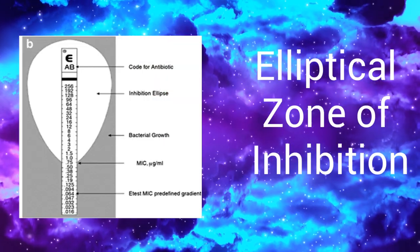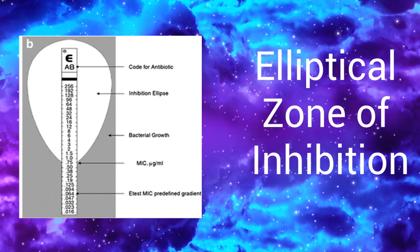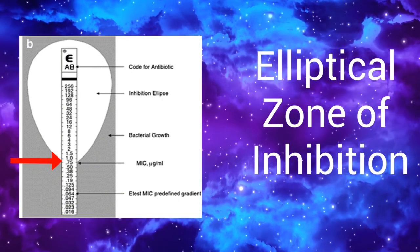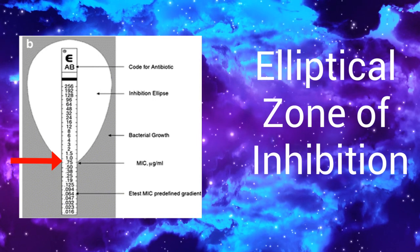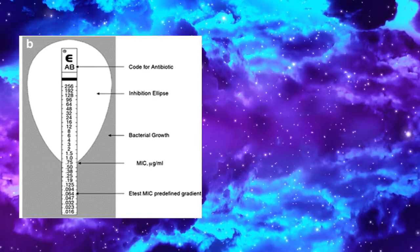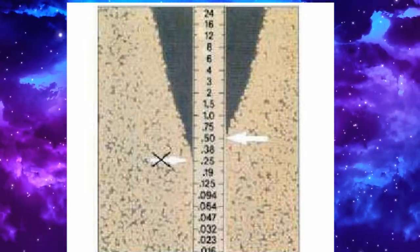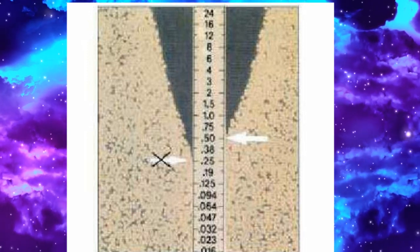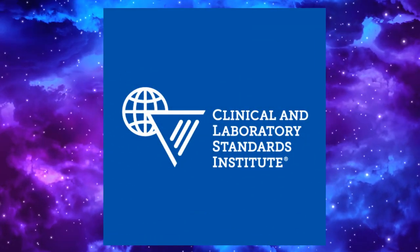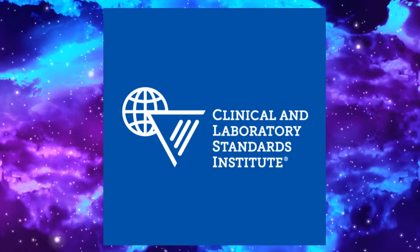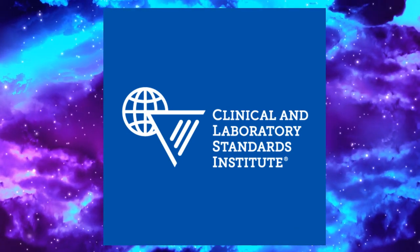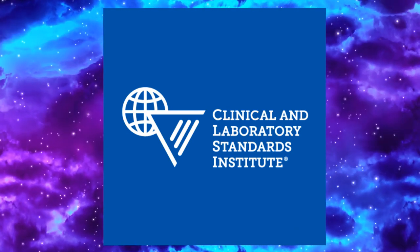For result, we see an ellipse and read MIC at the point where it intersects the scale. If ellipse intersects between two values, we always round up to the higher value. If intersect differs on either side of the strip, we read MIC of the higher value. MIC values can be interpreted as sensitive, intermediate or resistant by comparing the breakpoint values of each antibiotic with the criteria recommended by the CLSI standards.